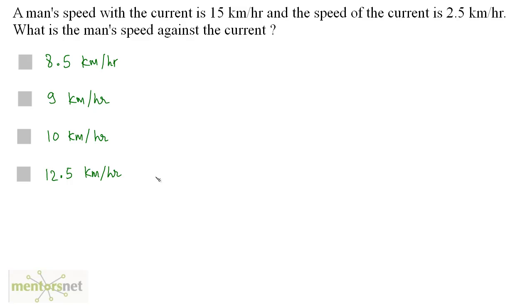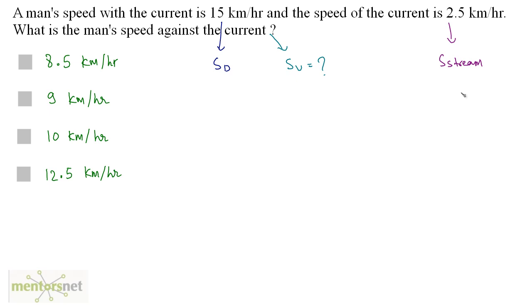A man's speed with the current is 15 kilometers per hour and the speed of the current is 2.5 kilometers per hour. What is the man's speed against the current? So the man's speed with the current is 15 kilometers per hour — this is actually the downstream speed. The speed of the current is 2.5 kilometers per hour, so this is basically the speed of the stream. What we want is the man's speed against the current, which is the upstream speed. We know the formula: speed of the stream equals downstream speed minus upstream speed divided by 2.